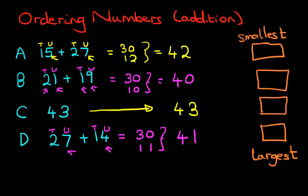Now, we simply order them. And I'm just going to change colours for this. We order these numbers here. So, we've got 42, 40, 43, and 41. Which is the smallest number? Well, that's quite easy. It's this one here. 40. 40 is the smallest number. And that is B. So, let's write B at the top. That is the smallest number.